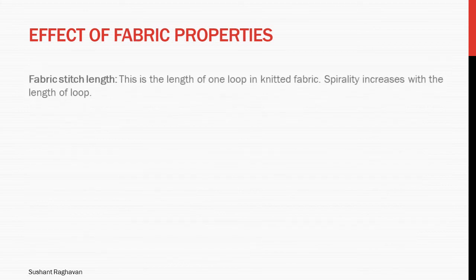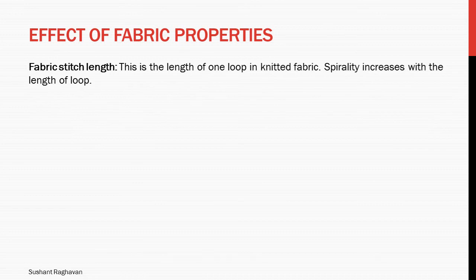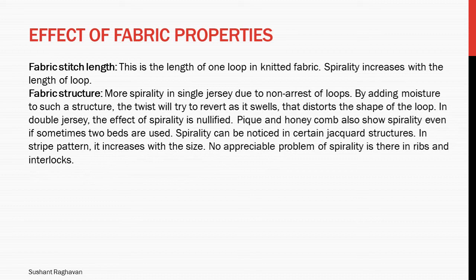Fabric stitch length is the length of one loop in knitted fabric; spirality increases with the length of the loop. Regarding fabric structure, more spirality occurs in single jersey due to non-arrest of loops. Adding moisture to such a structure causes the twist to revert as it swells, distorting the shape of the loop. In double jersey, the effect of spirality is nullified. Peaky and honeycomb structures also show spirality even when two beds are used.